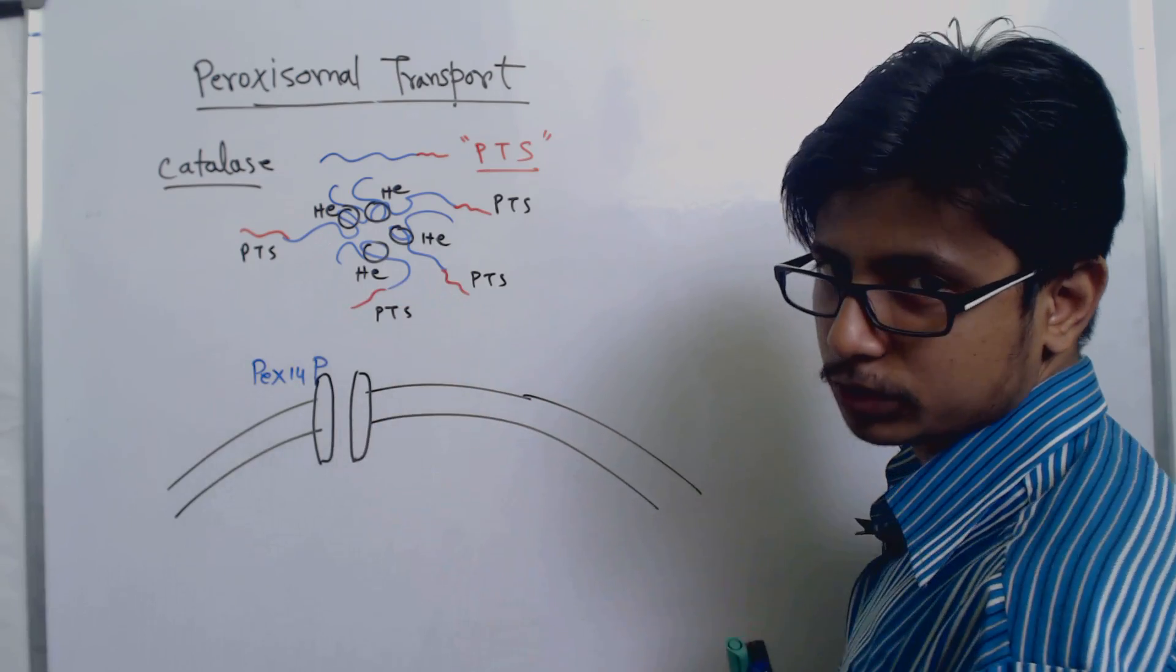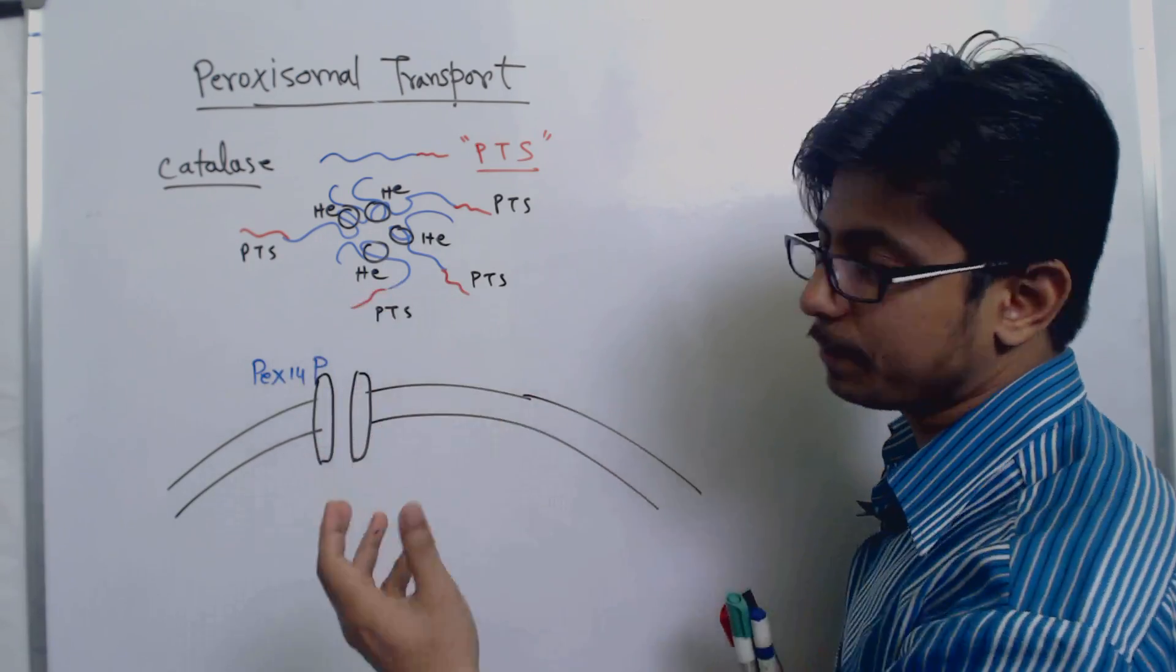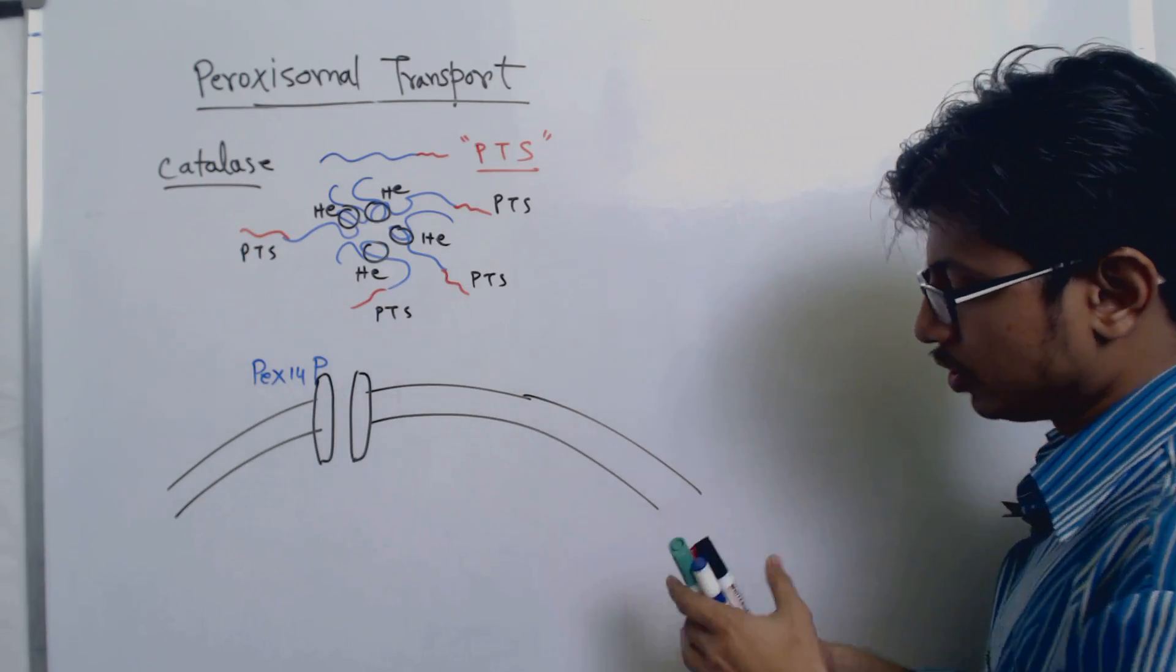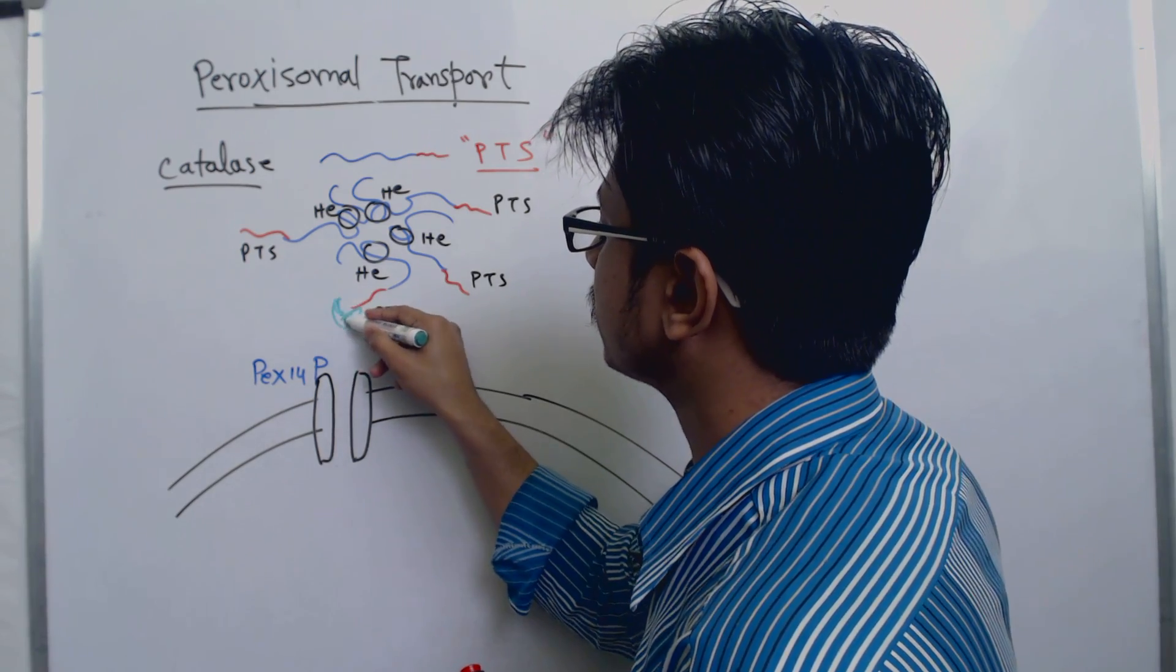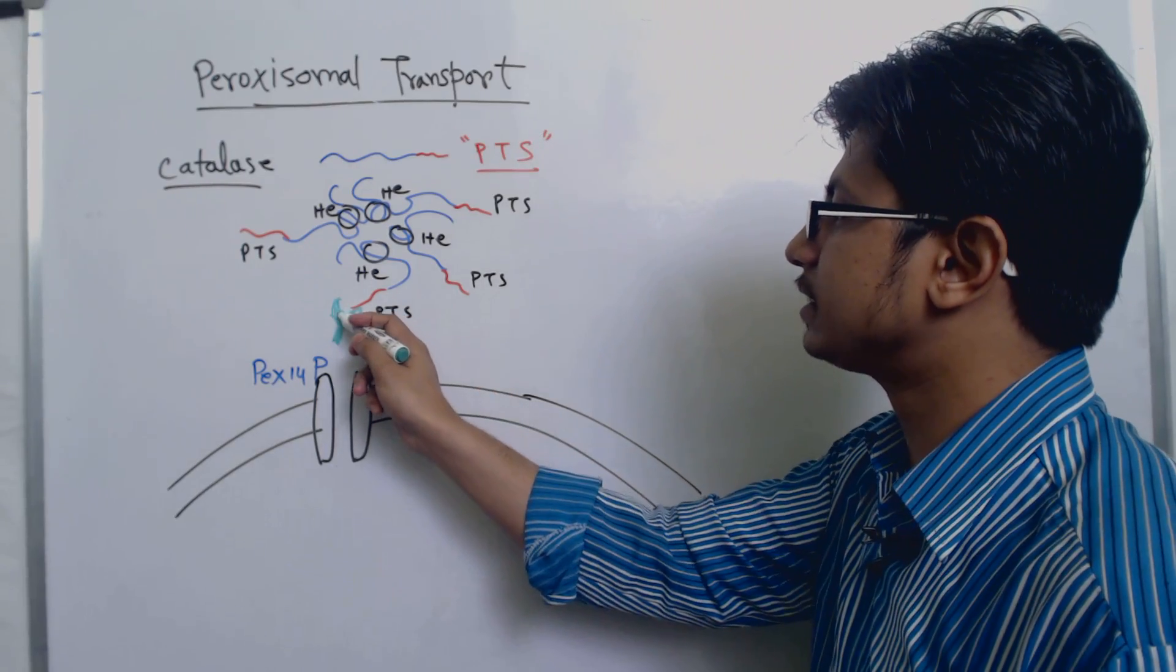The PTS receptor proteins are surrounding this place in the cytosol. Once the PTS receptor protein binds with it, this PTS receptor protein goes and interacts with PEX14P.